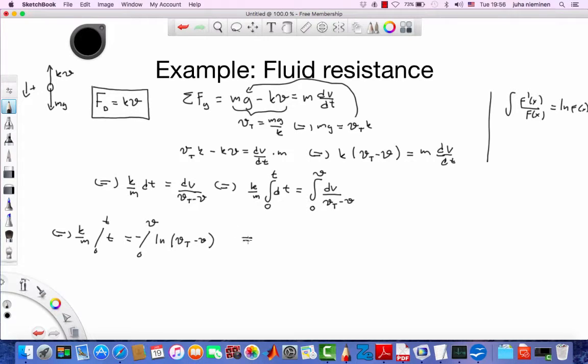Alright, now we can put the limits in. So on the left hand side, it's only going to be k over m. That's going to be t, the upper limit minus the lower limit, zero, like this.